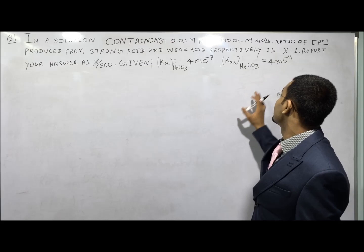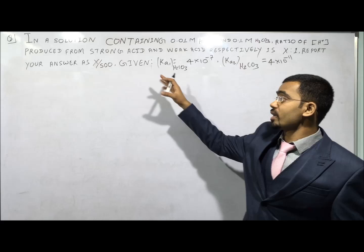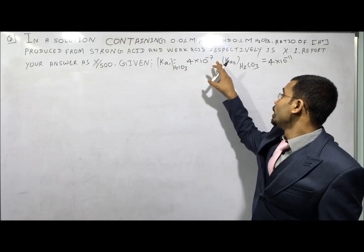Report your answer as X divided by 500, given K₁ of H₂C and K₂ of H₂C is 4.11 (as provided in the question).